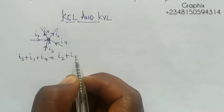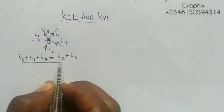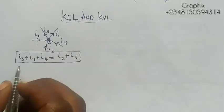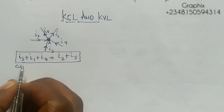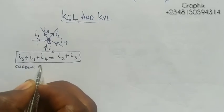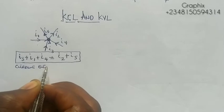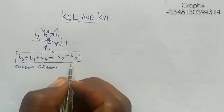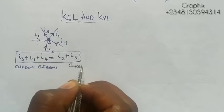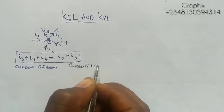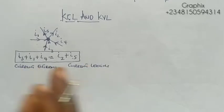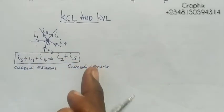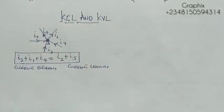If I add another current I5 that is leaving, then Kirchhoff's Current Law states that the sum of current entering equals the sum of current leaving. So current entering equals current leaving — that is what KCL is telling us.